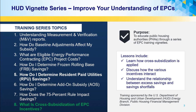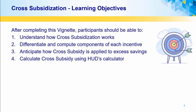As we go through the slides, we will introduce you to critical HUD program references that you will need to become familiar with before you can undertake an EPC. After completing this vignette, participants should be able to understand how cross-subsidization works, differentiate and compute components of each incentive, anticipate how cross-subsidy is applied to excess savings, and calculate cross-subsidy using HUD's calculator.